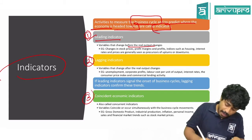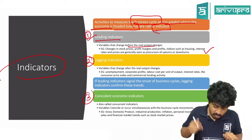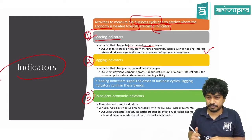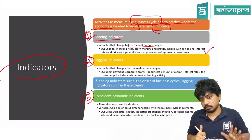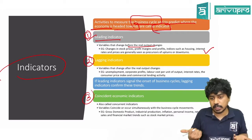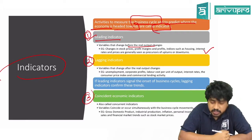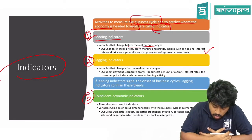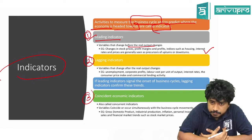Exam questions will ask which is a leading indicator. Some things overlap — you cannot always clearly say this is a leading or lagging indicator. Changes in prices, profit margins, indices, and interest rates are precursors to ups and downturns — they change before things happen. If prices are increasing rapidly now, that is a leading indicator that something is going to change.